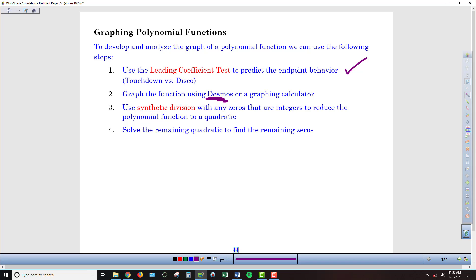But Desmos has some limited capacity in that we can find integer zeros pretty easily, but any zeros that are not integers are going to be pretty difficult for us to find exact values for. Or complex zeros, as we'll see in our next lesson, don't show up at all.